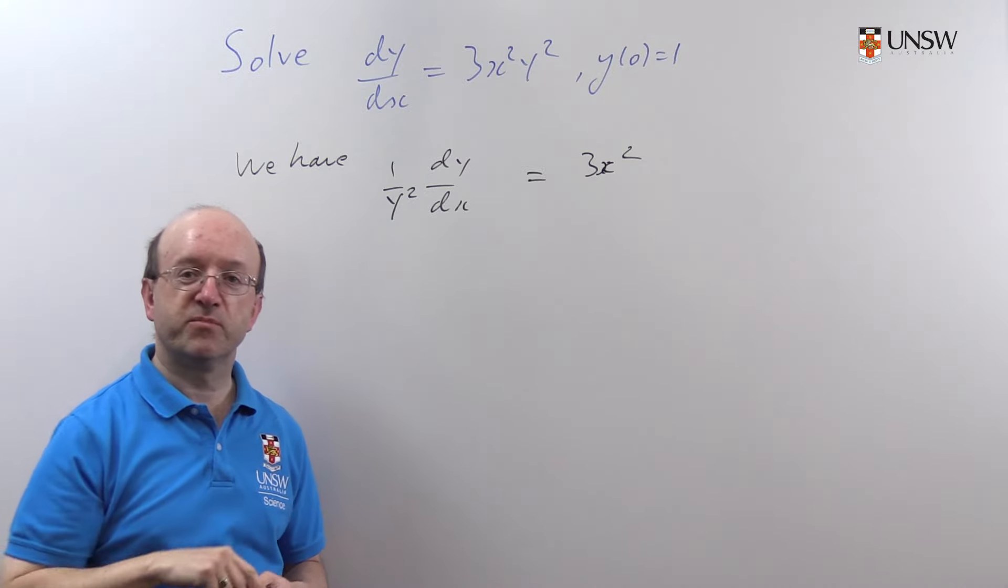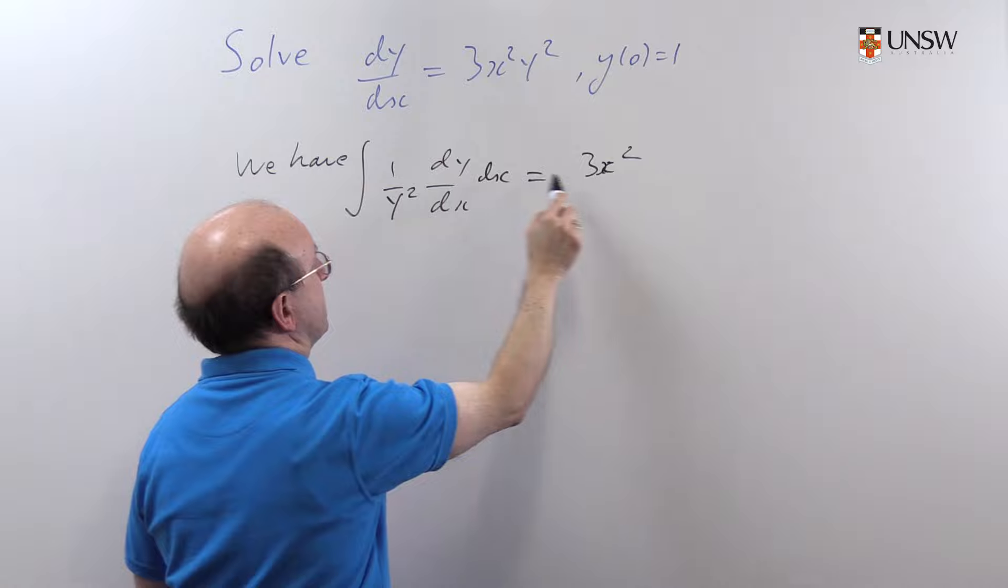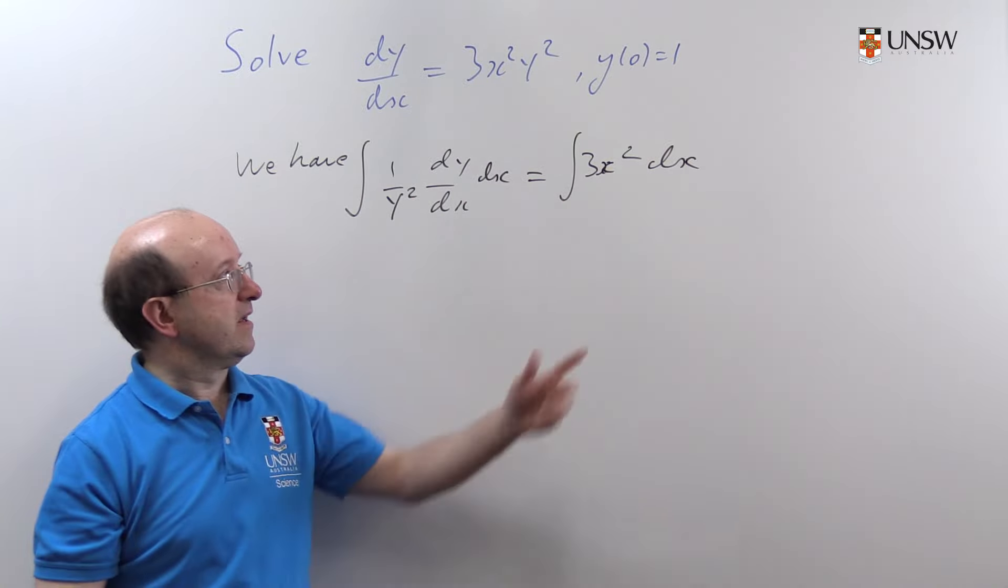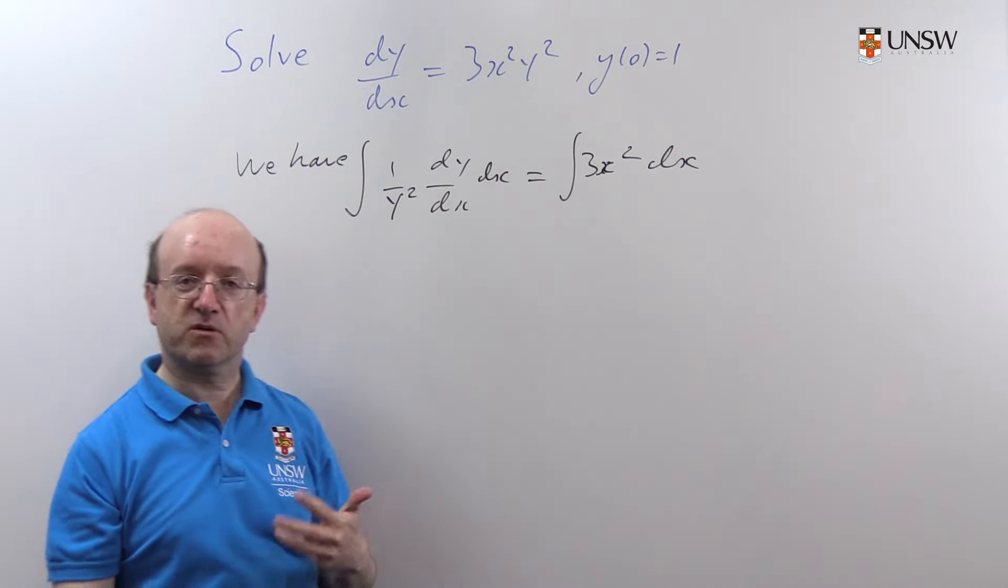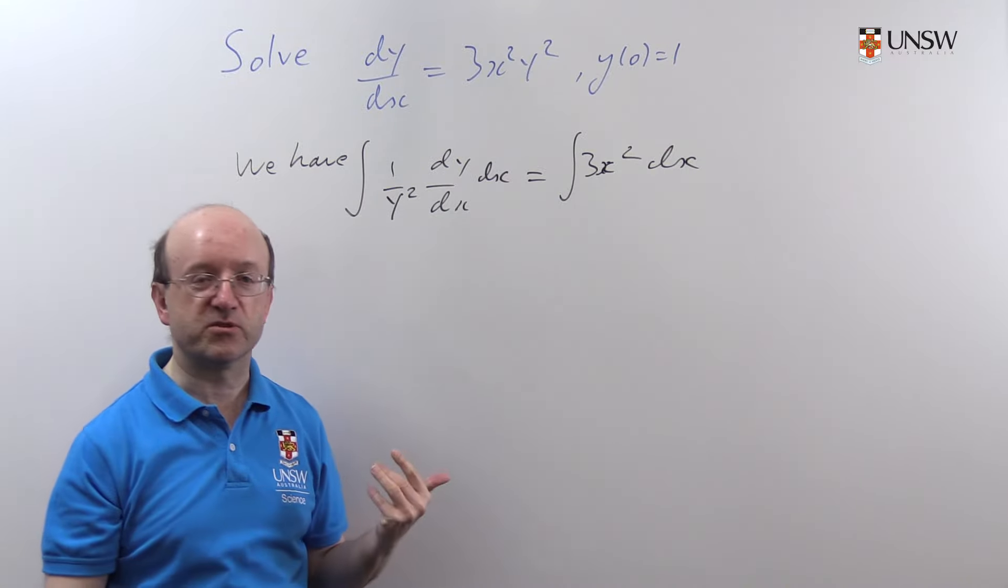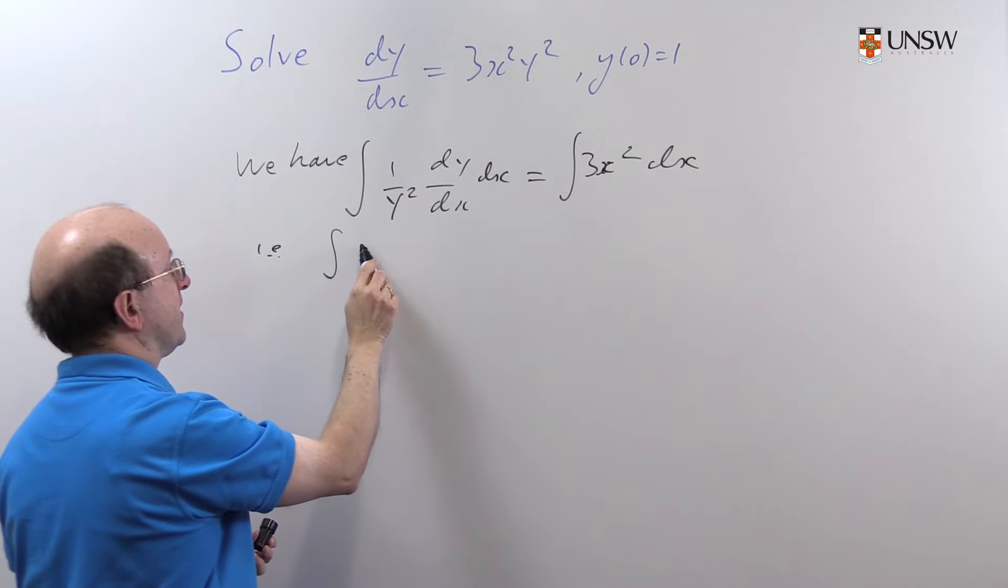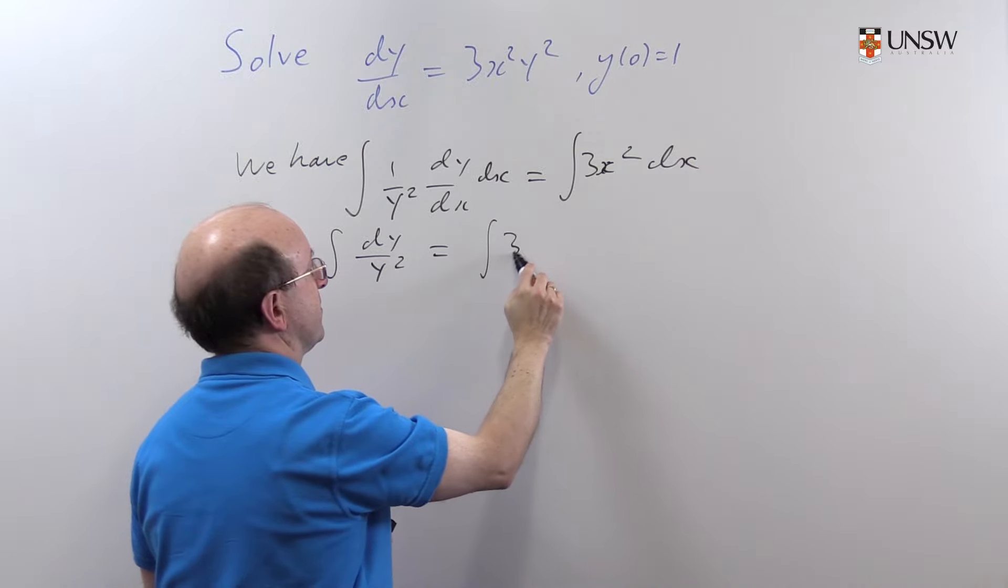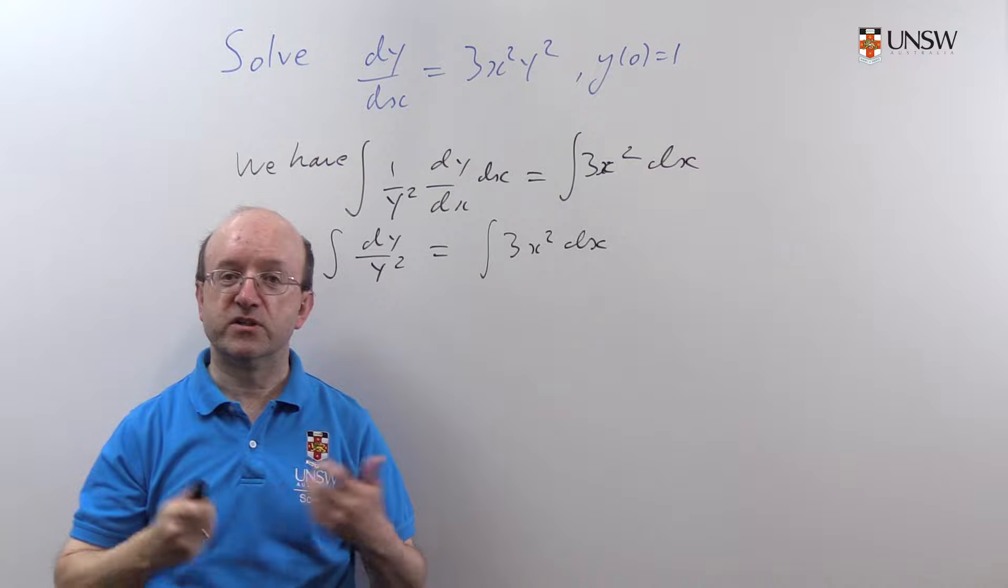And then we integrate both sides of this equation with respect to x. This side is very straightforward. On this side we actually have a change of variable problem. We can rewrite this as just an integral with respect to y. So we have the integral of 1/y² dy equals the integral of 3x² dx. And now we just integrate both sides.